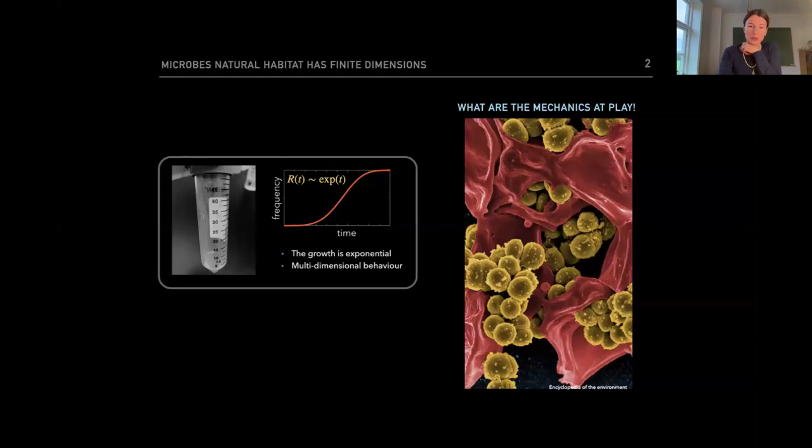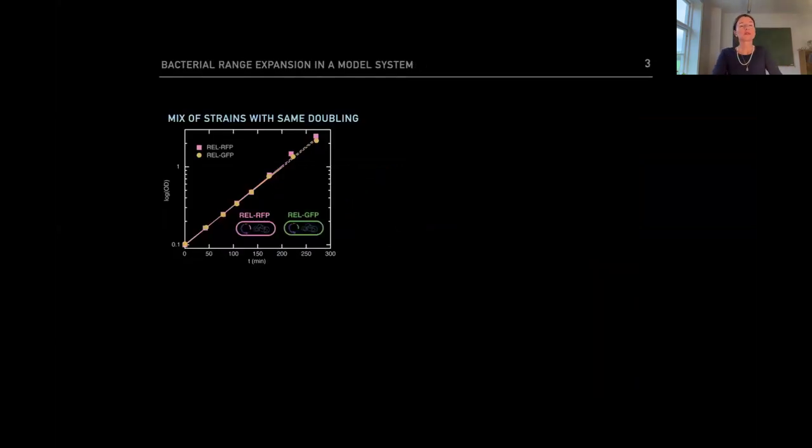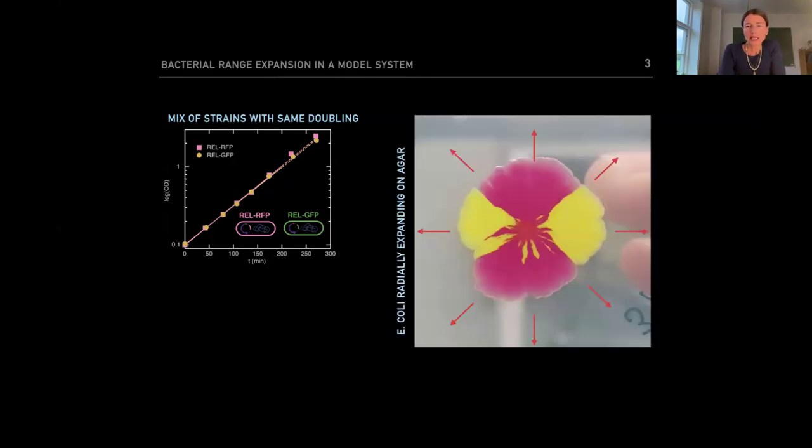I'll give you an example. In my lab, we did the following very simple experiment, where we're mixing two strains of E. coli that are isogenic, apart from a plasmid-carrying fluorescent color. And then we mix, inoculate on an agar surface, and let them compete.